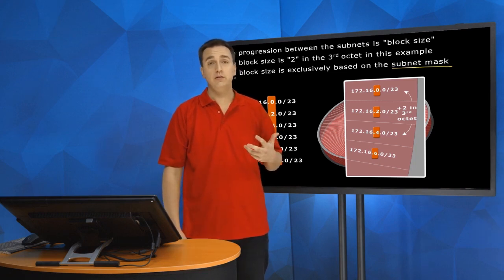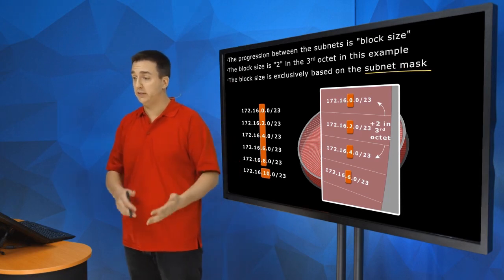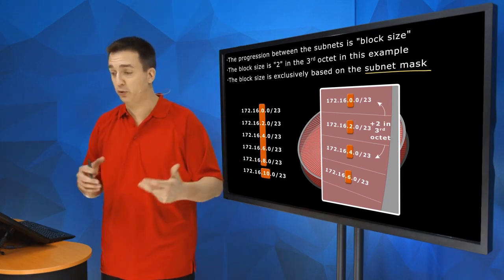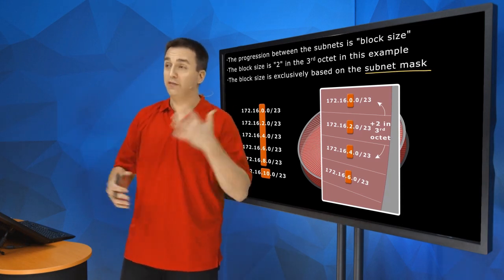Well, then the fifth subnet, 8. Sixth subnet, 10. Then 12, 14, 16, 18, 20, 22, 24, 26, 28, 30, 32, 34, 36, 38, 40, 46, 48, 50, 52, 54. You see?